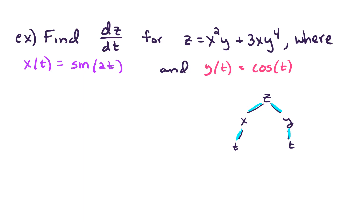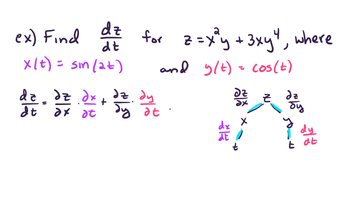For z over x, that's going to be the partial derivative of z with respect to x. For x over t, that's going to be dx/dt. Down the other side we get the partial of z with respect to y, times dy/dt. So the formula we'll need to compute the derivative dz/dt is given as follows. Let's compute each of these pieces and then put them back into our formula.